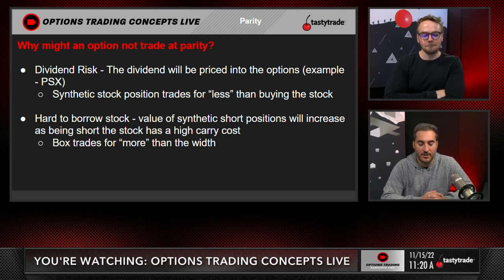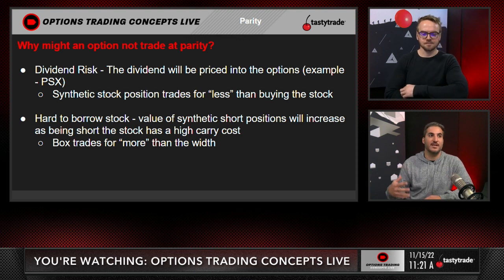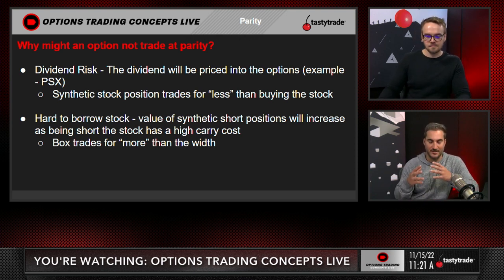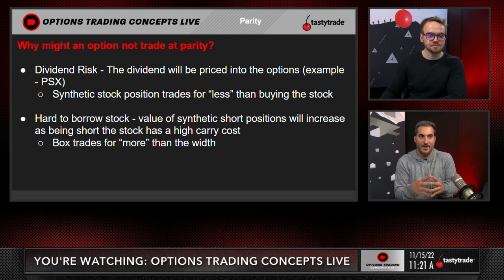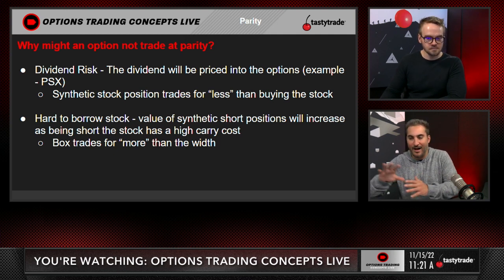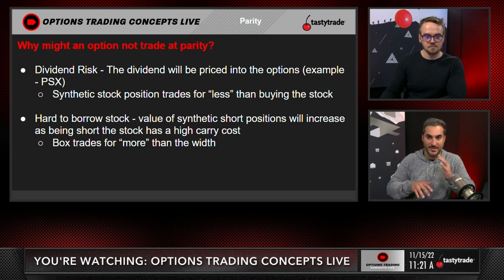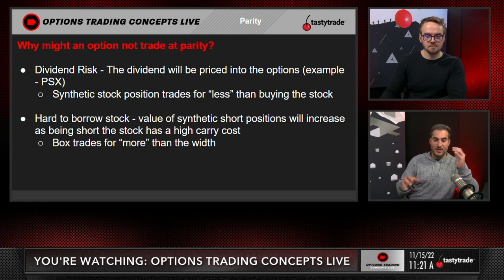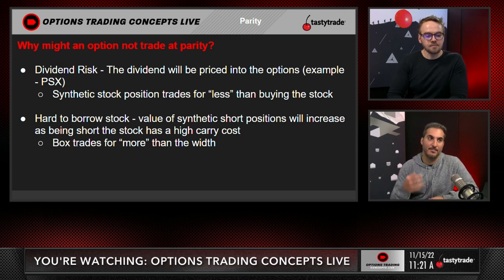Finally, we'll talk about parity and how it comes into play. One reason you might perceive an arbitrage or risk-free value is dividend risk — the dividend is priced into the options. You can see this by looking at a parity trade: being synthetically long stock via a short put and long call, then selling stock. That transaction should trade at zero if there's no value coming down the line. If you could buy that synthetic position, sell stock, and have a net value, that would be risk-free money — but it doesn't exist, because the upcoming dividend offsets that perceived free value.